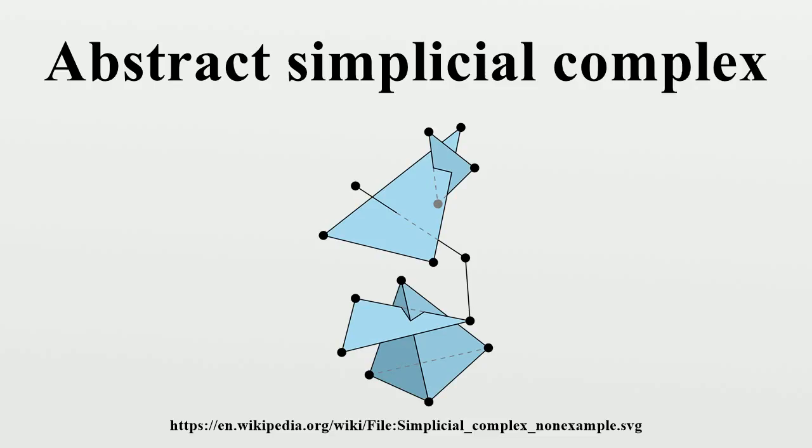The d-skeleton of delta is the subcomplex of delta consisting of all of the faces of delta that have dimension at most d. In particular, the one-skeleton is called the underlying graph of delta. The zero-skeleton of delta can be identified with its vertex set, although formally it is not quite the same thing.